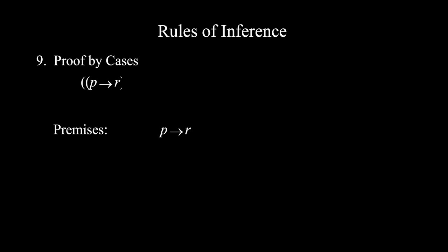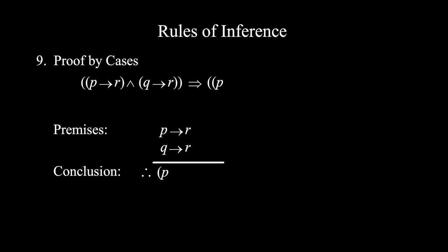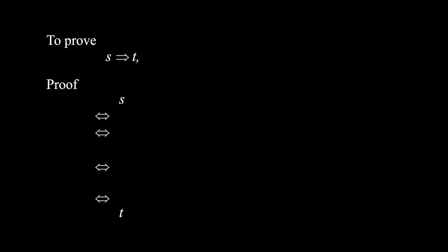Nine: Proof by Cases — p implies r, and q implies r, therefore (p or q) implies r. Note that in both premises, p and q both imply r. Now, to prove that S logically implies T, we can start with S and try to get to T, where in every step we can use logical equivalents (the laws of logic discussed in previous videos) or logical implication in that direction — that is, the rules of inference. We can also start from T and go up to S, or start from S and T and meet somewhere in between. Usually, we start from the more complicated propositions. Now let's see some examples.